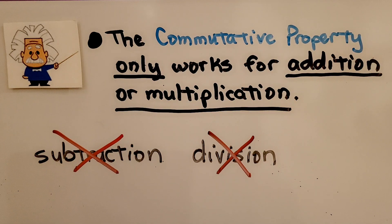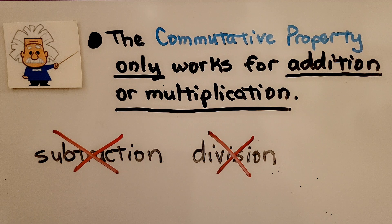Remember, the commutative property only works for addition or multiplication — it does not work for subtraction or division. We can't just switch around the numbers for those operations, but we can with addition and multiplication and get the same answer.